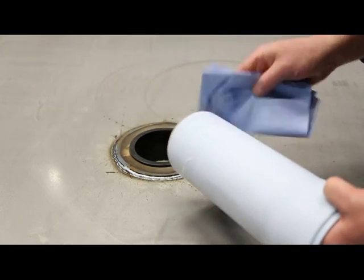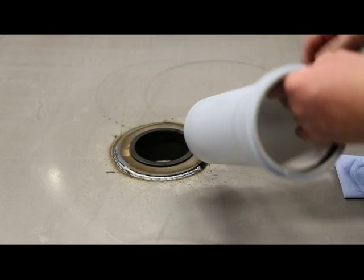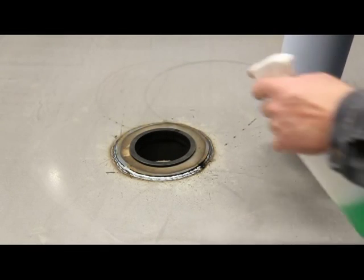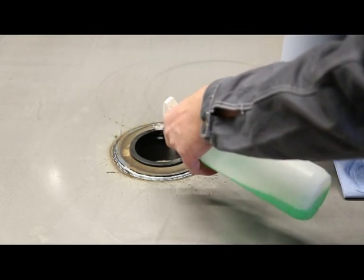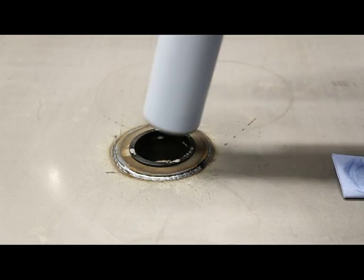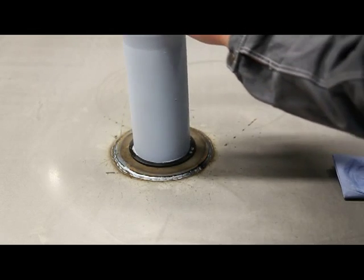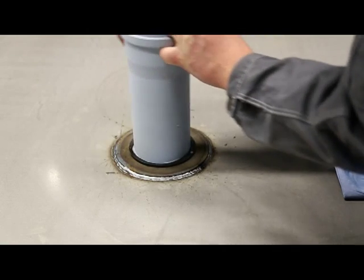Lubricate the surface of the pipe and the inside of the rubber grommet with soap water. Route the pipe through the opening from the grommet side of the watertight penetration seal.